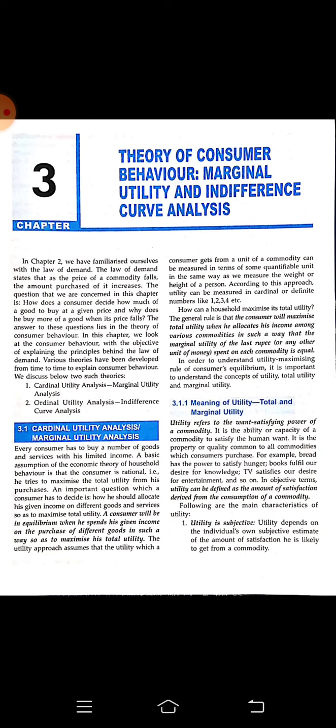Cardinal numbers are 1, 2, 3, 4, 5, 6 — all these are cardinal numbers. Ordinal utilities are those utilities when we measure them in terms of 1st, 2nd, 3rd, 4th — we are ranking the utility.